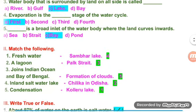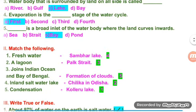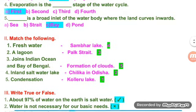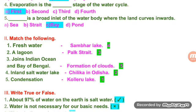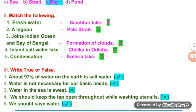Match the following: Fresh water - Kulleru Lake; Lagoon - Chilika in Odisha; joins Indian Ocean and Bay of Bengal; Island - Saltwater Lake - Sambar Lake. Condensation is the formation of clouds.